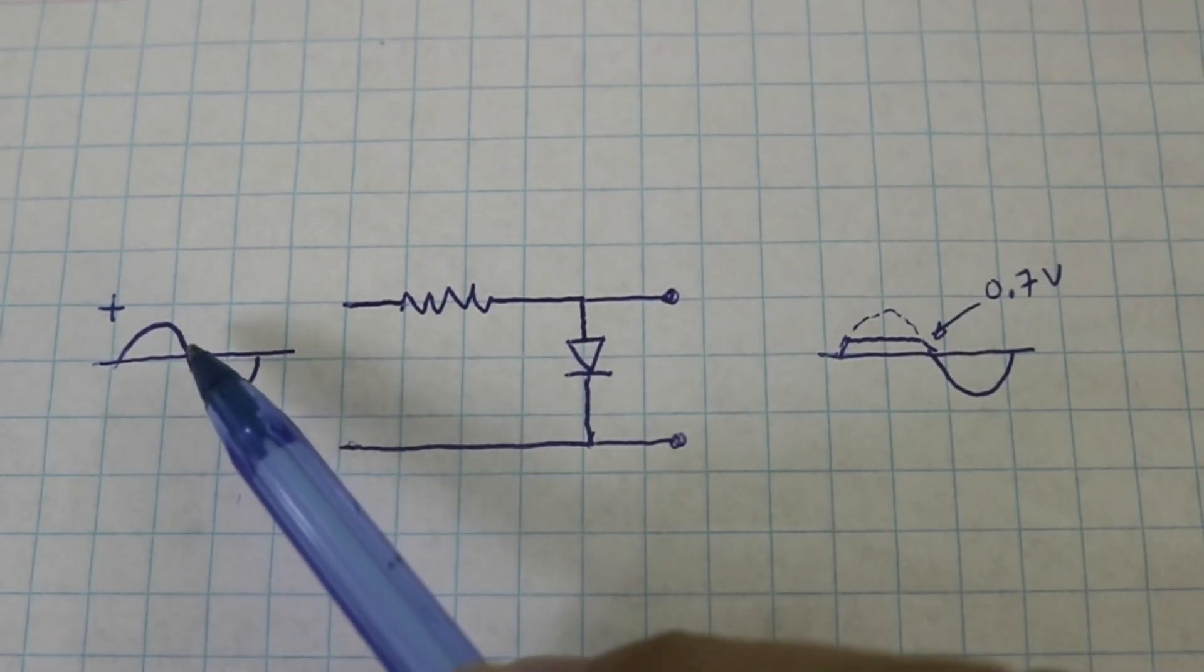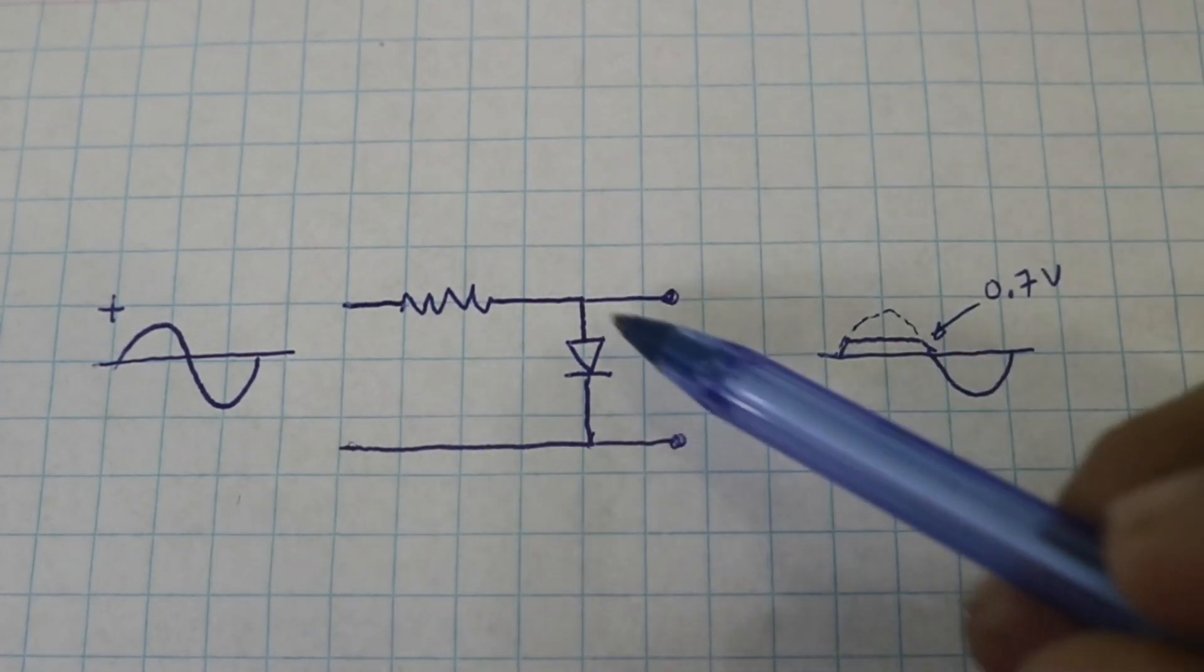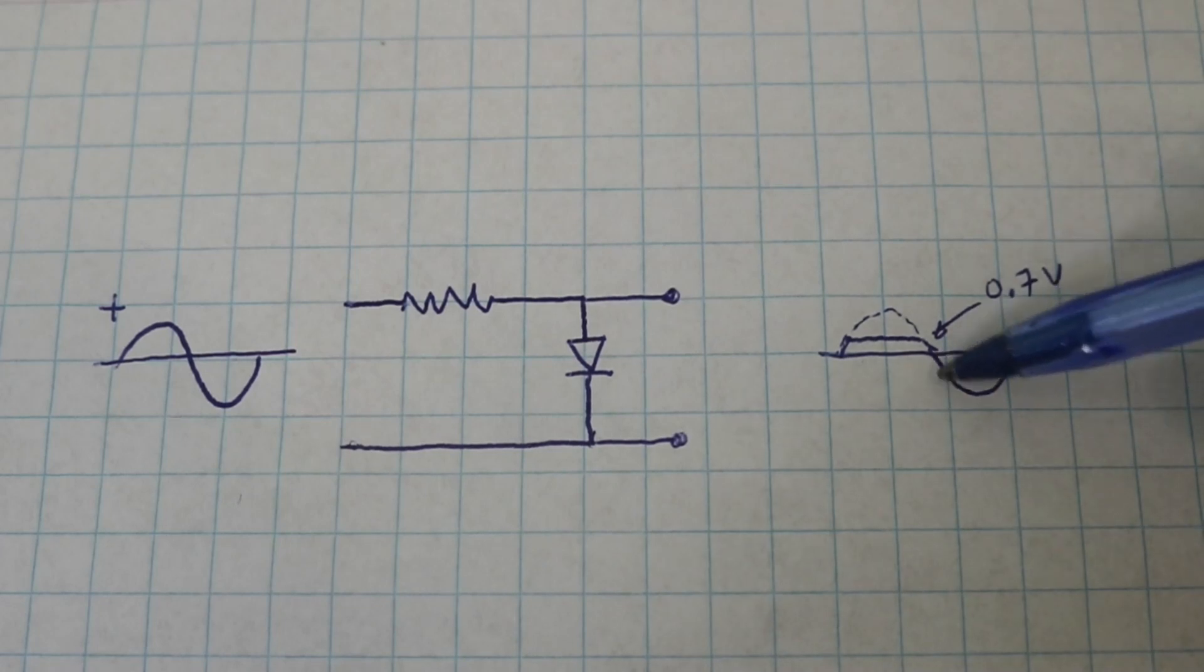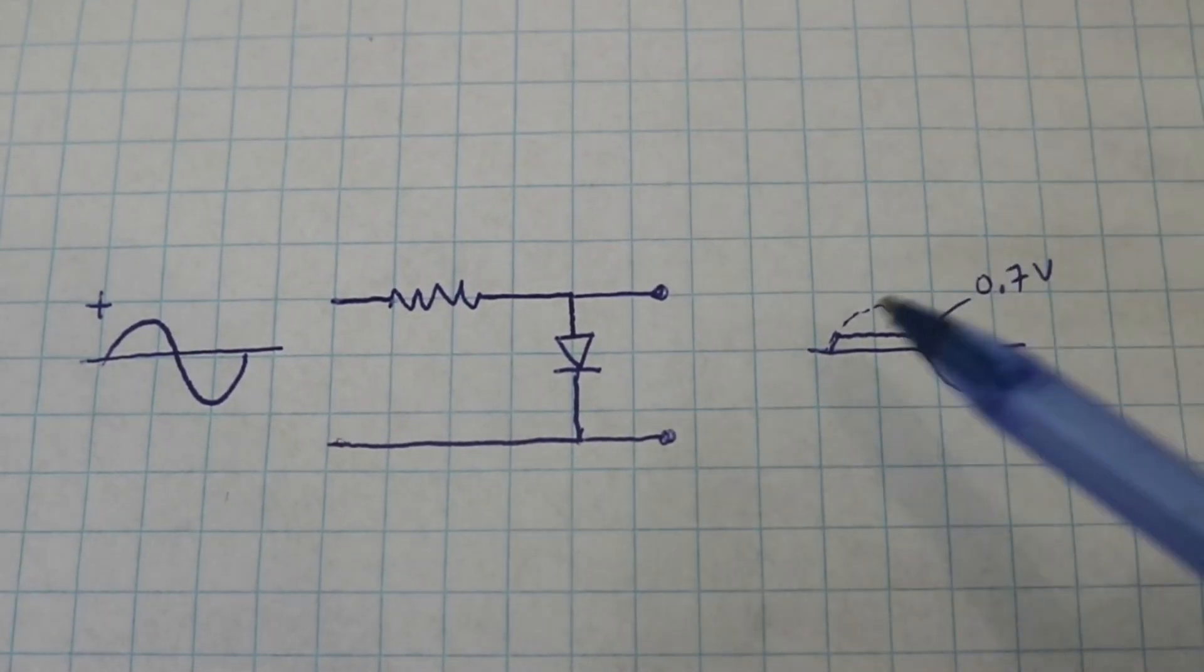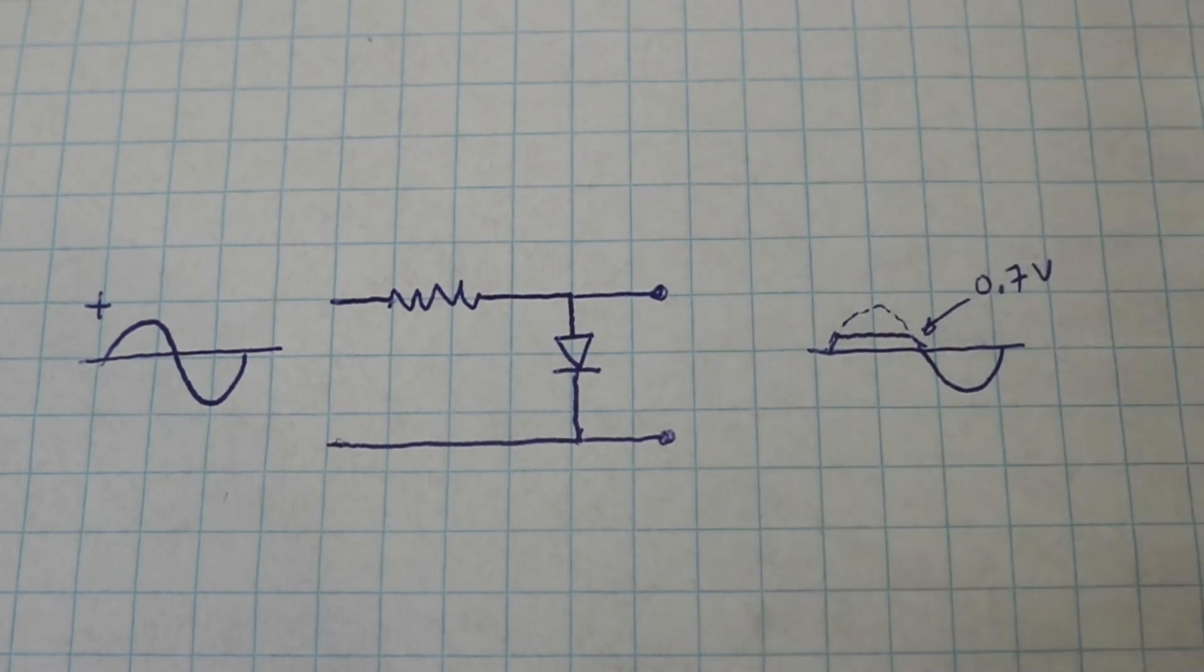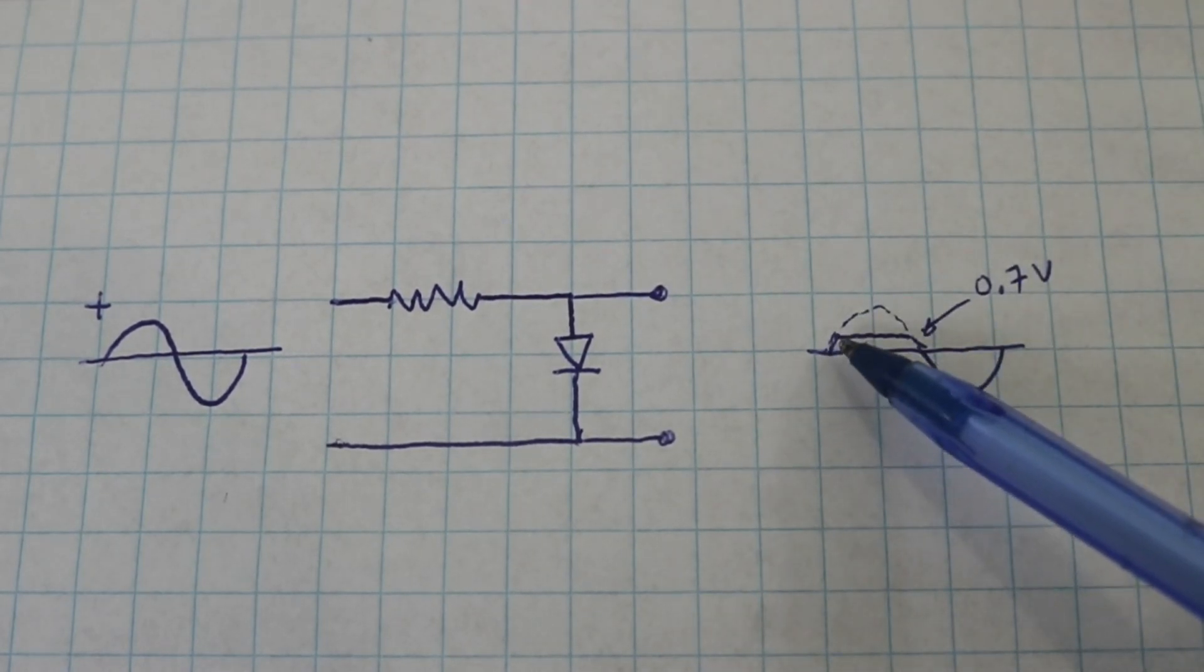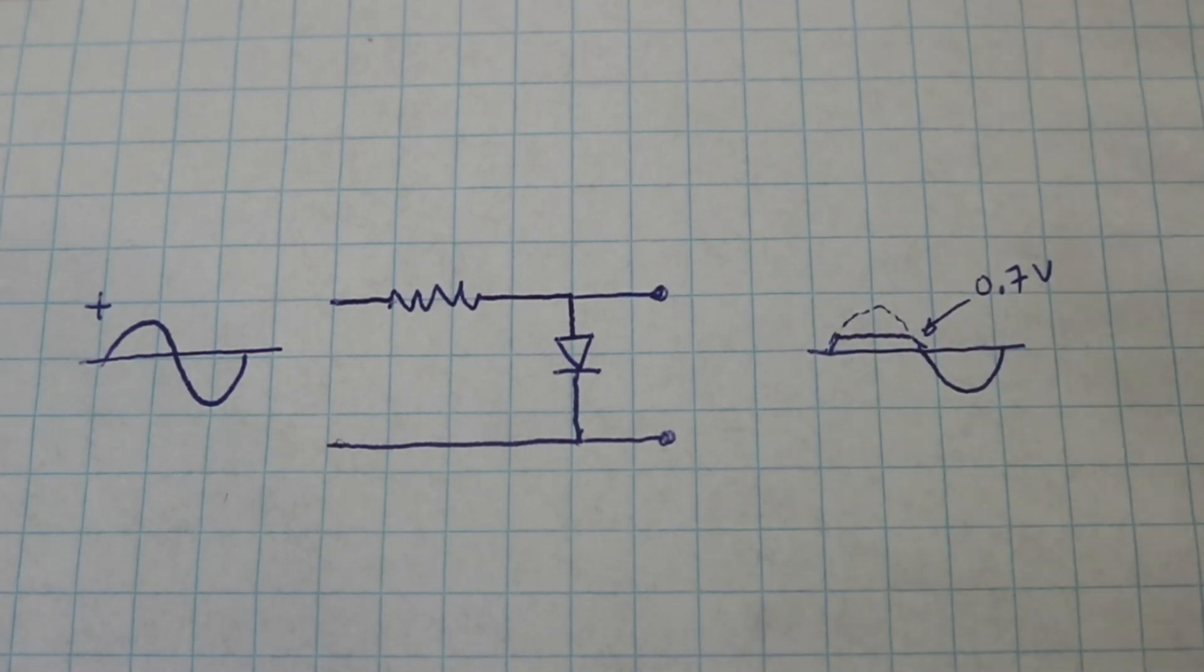Now in the negative semi-cycle we will have positive here and negative here. So the diode will not conduct and we see the full negative semi-cycle. So the diode is clipping a part of the positive semi-cycle. We only see voltages less than 0.7 volts, and this is the function of the clipping circuit.